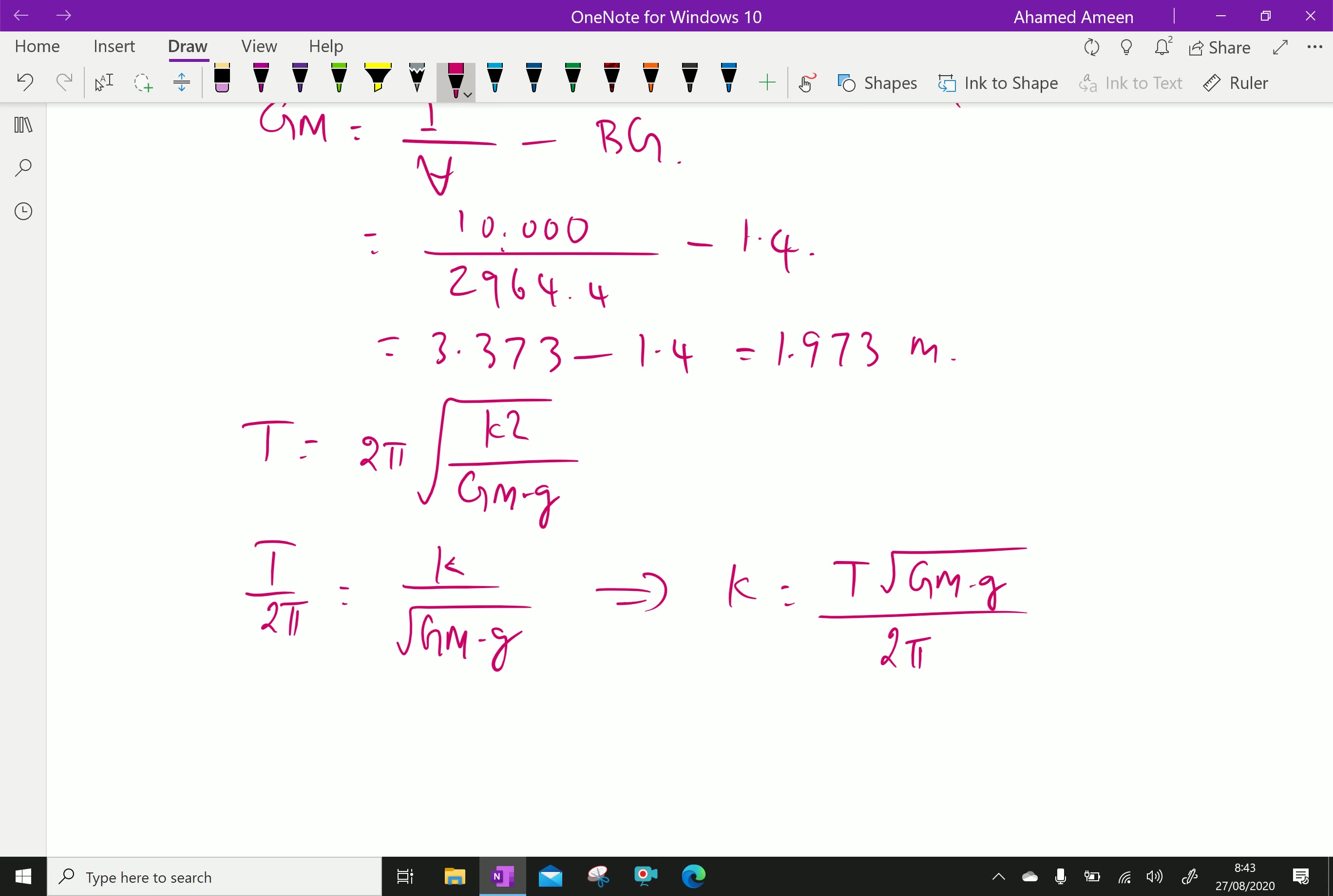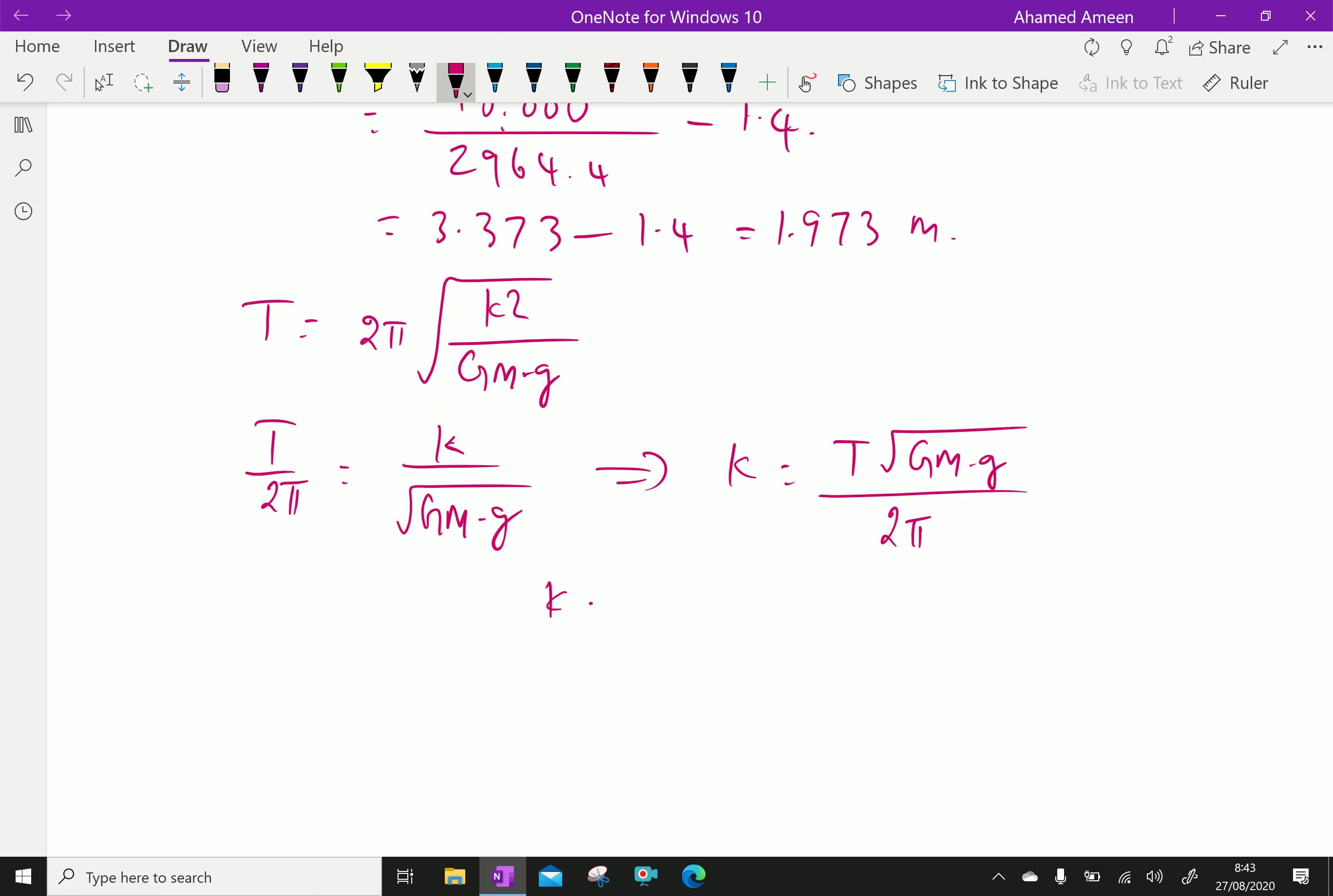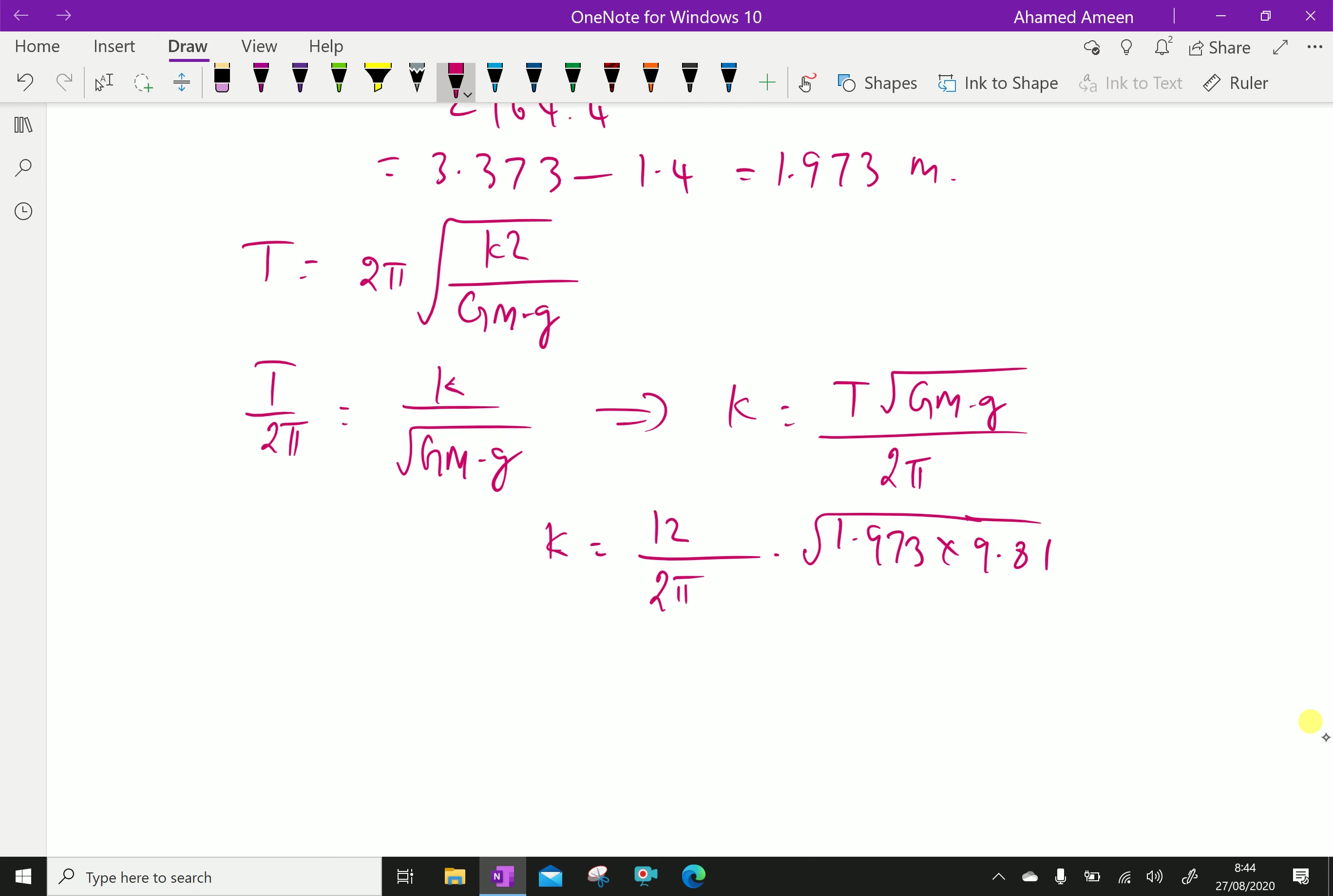Let us apply the given values. K equals 12 over 2 pi into square root of gm is 1.973 into 9.81. We have radius of gyration k is 8.41 meter.